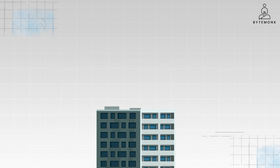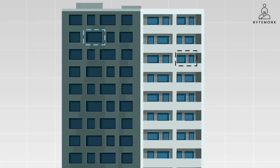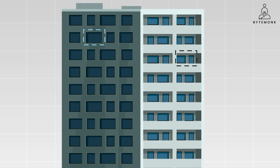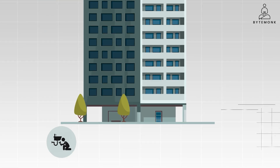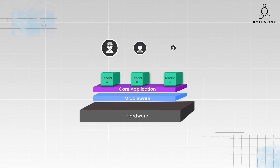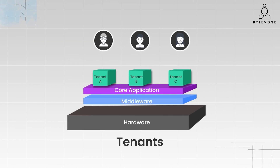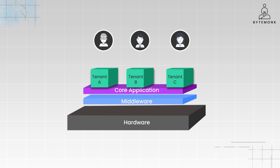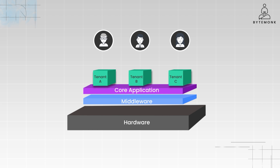Imagine an apartment building where multiple tenants reside in the same building, each with their own separate living space. They share common infrastructure like the plumbing, electrical system, and building structure. Multi-tenant architecture in computer science mirrors this model — a single instance of an application serves multiple customers or user groups called tenants, each with their own isolated data and configuration, ensuring privacy and security.